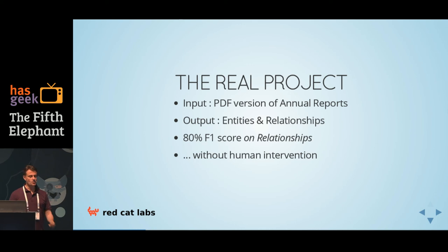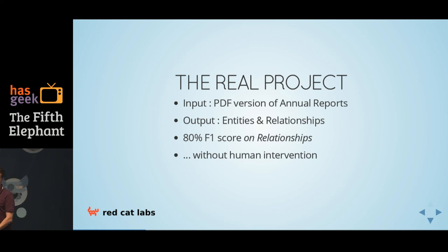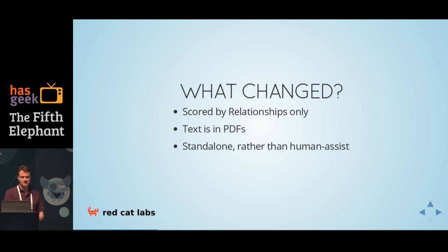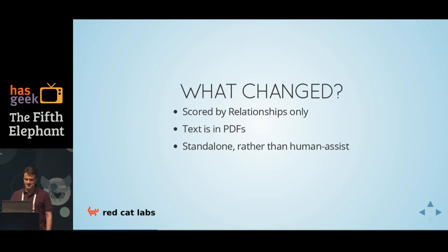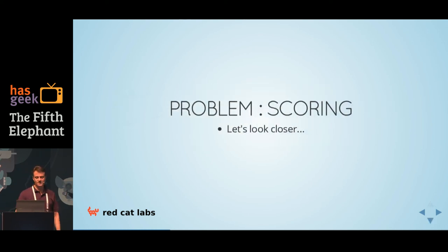They want this to operate in a turnkey manner — press a button, essentially parse the PDF, and get a CSV of the relationships coming out. So what changed? Scoring by relationships only is majorly different. Text being in PDFs is a challenge. And the standalone thing is probably not so easy. So let's go into a bit about why this is difficult.